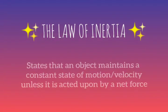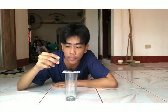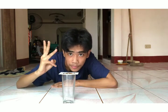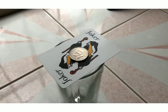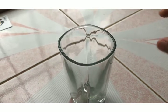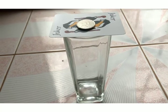The Law of Inertia states that an object maintains a constant state of motion or velocity unless it is acted upon by a net force. This means that an object at rest stays at rest, and an object moving continues to do so unless some force acts on it causing it to change. Inertia is generally considered to be the measure of an object's tendency to resist change of motion when acted upon by a net force.